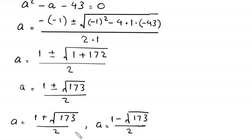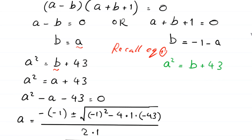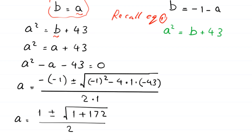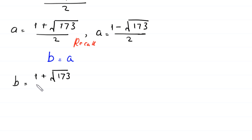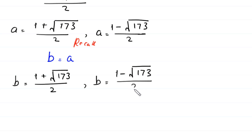Since b equals a in this case, the values of b are the same. So b equals 1 plus root 173 over 2, and b equals 1 minus root 173 over 2.